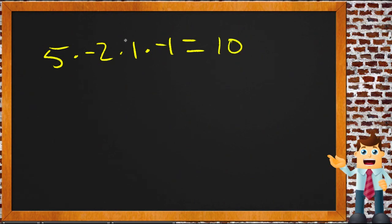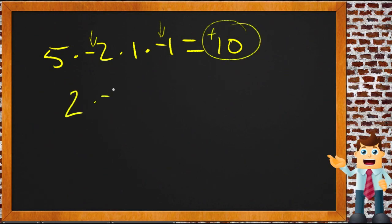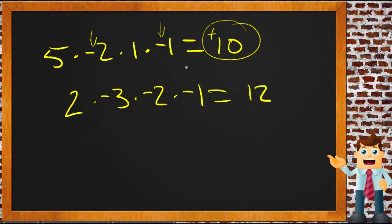My number is 10. I go back and count the negative signs: I had 2 negatives — that's an even number, so my answer is positive 10. Another example: 2 times negative 3 times negative 2 times negative 1. 2 times 3 is 6, times 2 is 12, times 1 is 12. But now I have 3 negatives — that's an odd number, so my answer is negative 12. That's it.